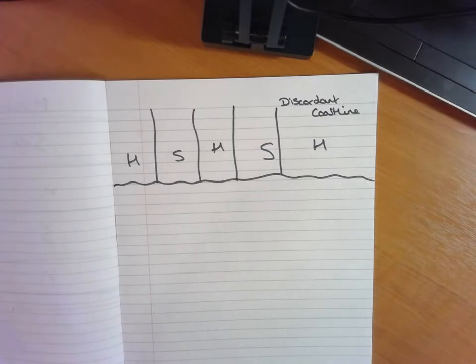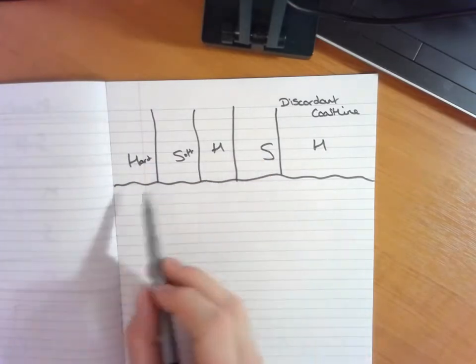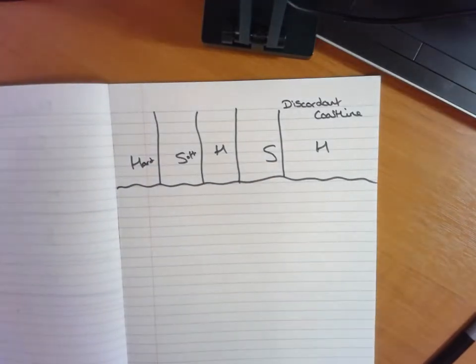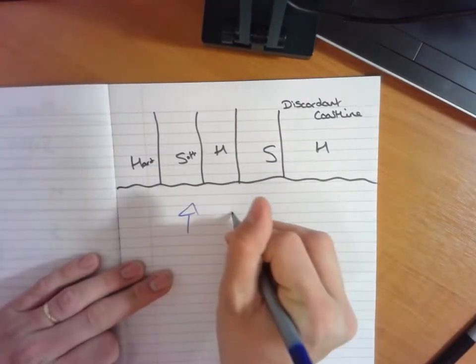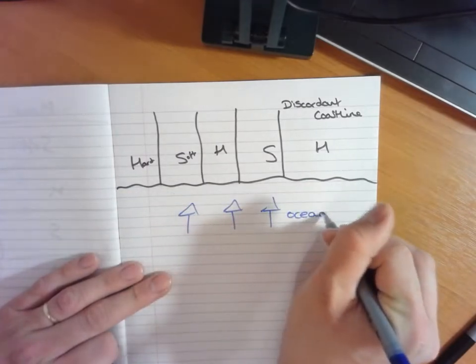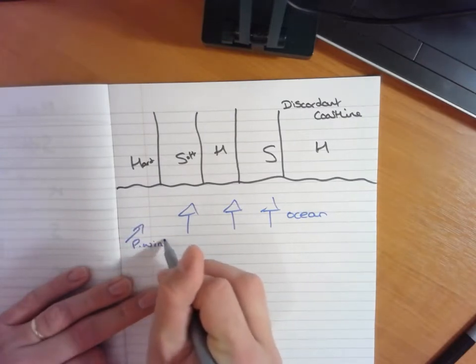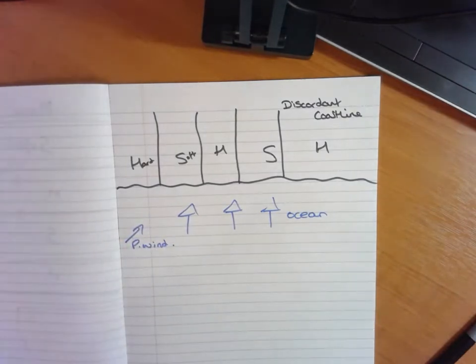So I've got hard and soft rock alternating in bands going along our coastline. We have got our waves and our ocean here. We will have the direction of prevailing wind.